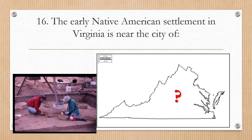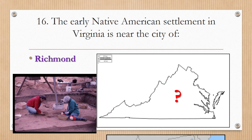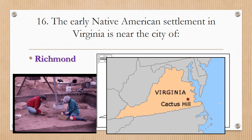Number sixteen: the early Native American settlement in Virginia, Cactus Hill, is near the city of what? Richmond. Cactus Hill is near Richmond.